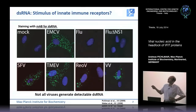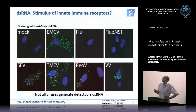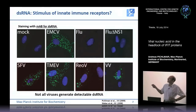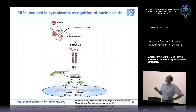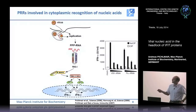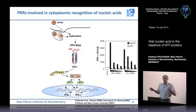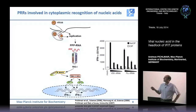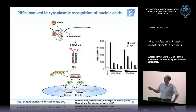However, some viruses seem not to generate large amounts of double-stranded RNA — for instance, orthomyxoviruses like influenza virus and bunyaviruses like Rift Valley Fever virus. We asked how these viruses are actually stimulating type 1 interferon. A couple of years ago, we identified that it is actually the virus genomic RNA that can stimulate type 1 interferon. Isolating genomic RNA from virus particles and transfecting it into cells gives high induction of type 1 interferon — true for vesicular stomatitis virus and influenza virus.